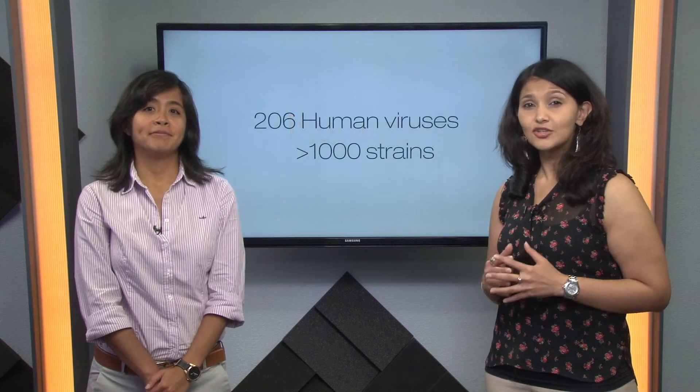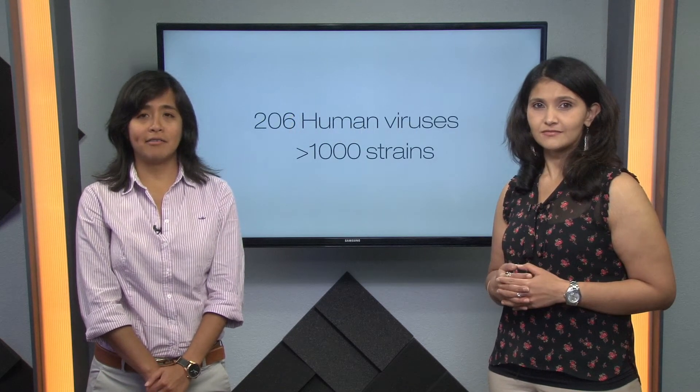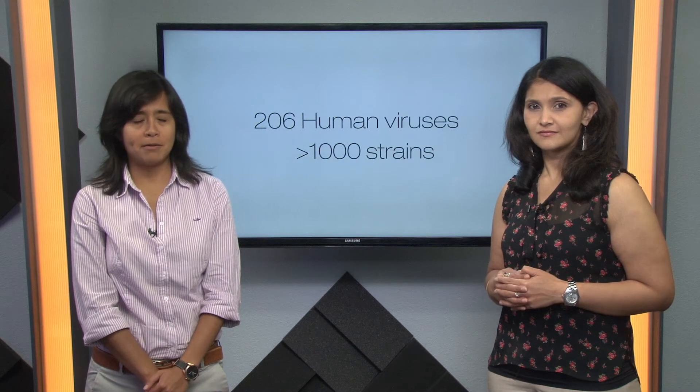569 human sera were tested against 206 human viruses, resulting in an average of 10 species of virus per person. That's still a lot. Two samples had antibodies against 84 viruses.